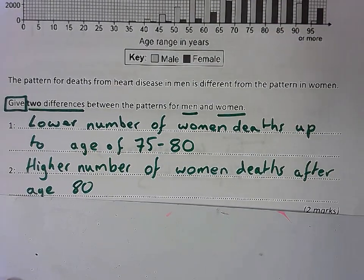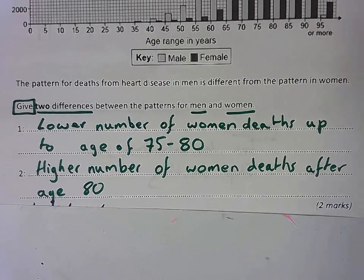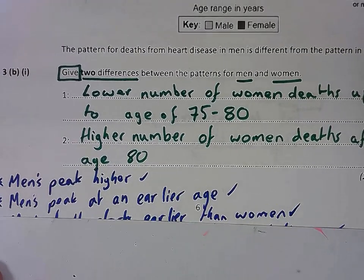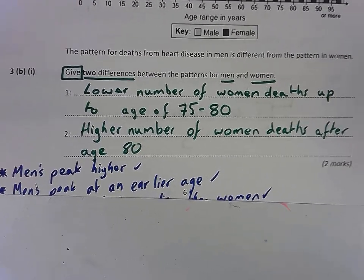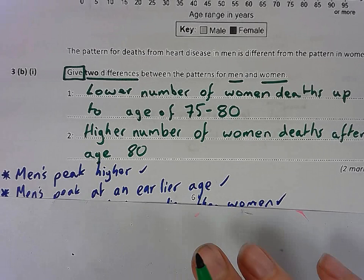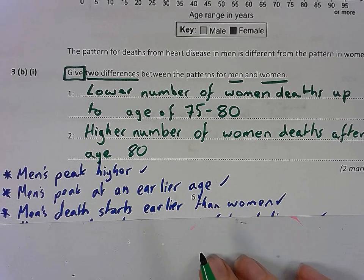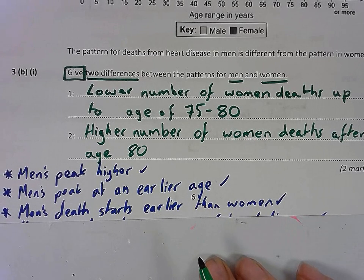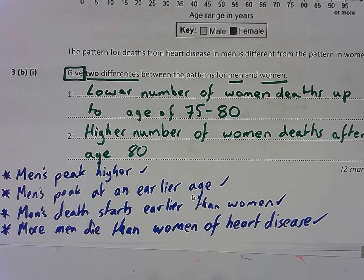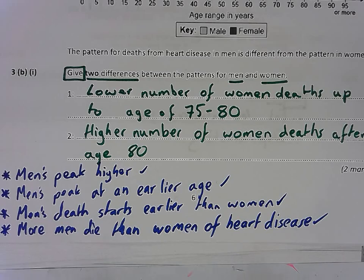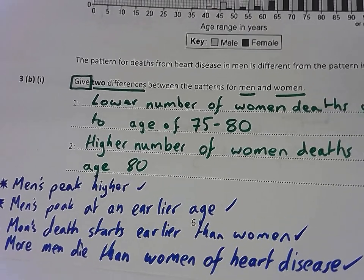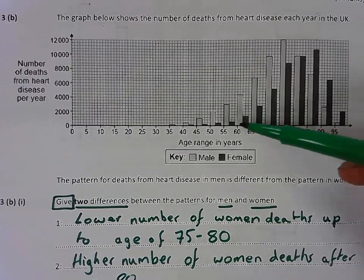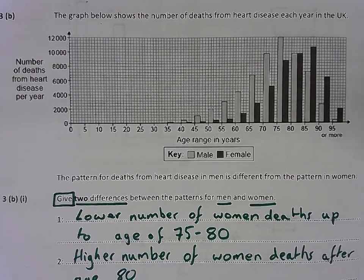Other correct answers would be that the men's bar peaks higher, the men's bar peaks at an earlier age, and men's deaths start earlier than women's. Or you could say that more men altogether die from heart disease, because overall there is more light grey than dark grey. Those would be your answers for question 3.